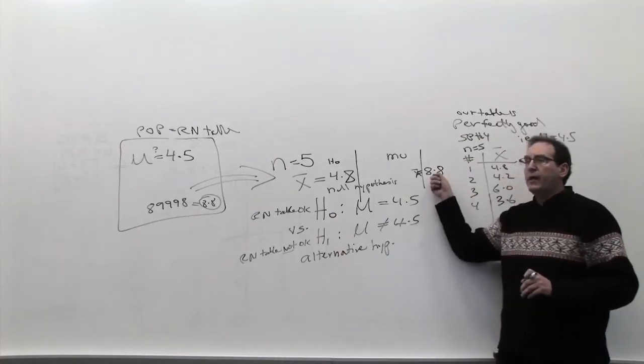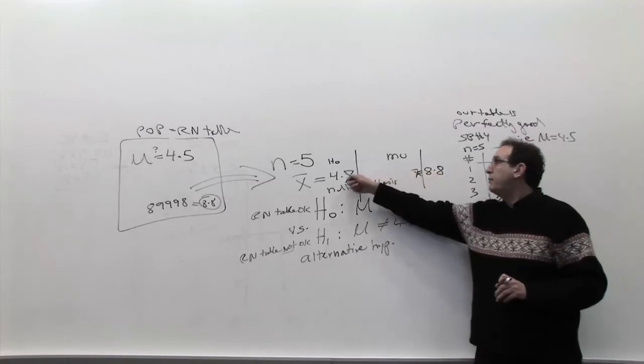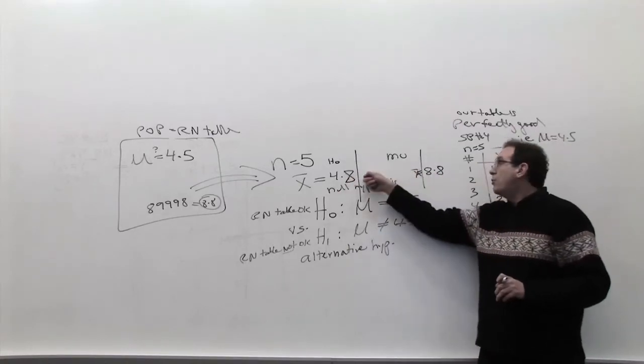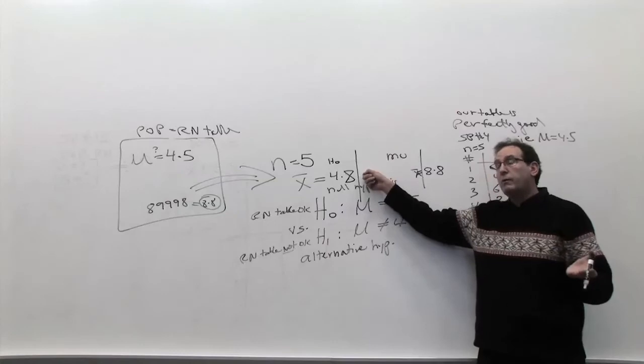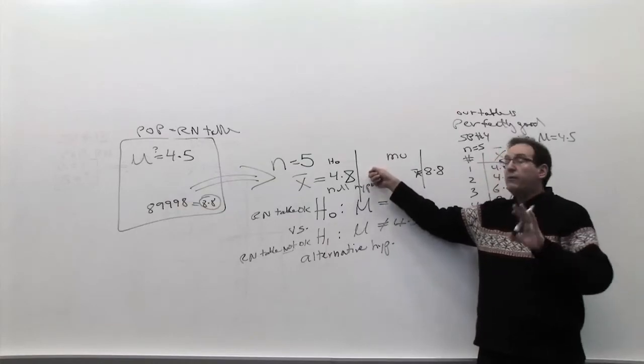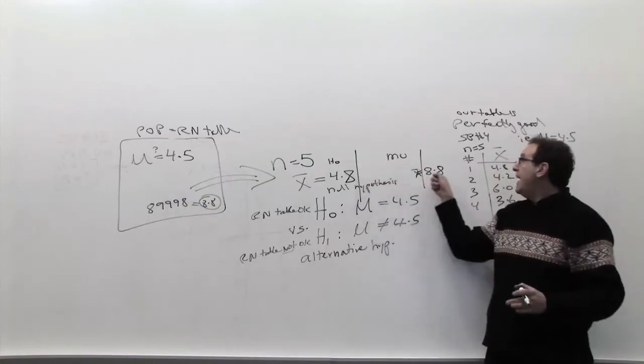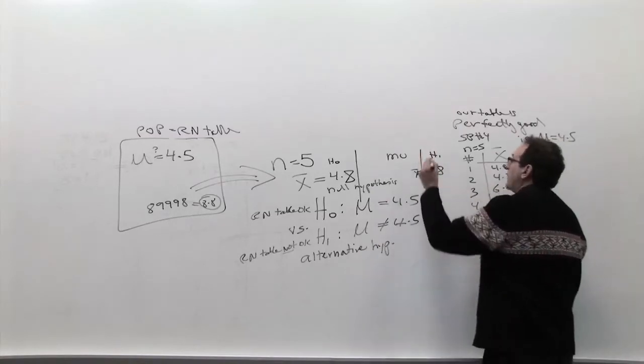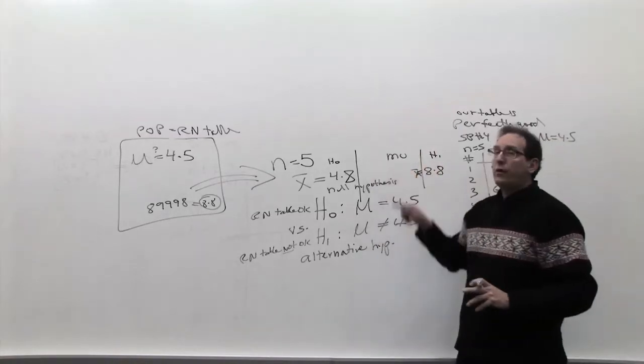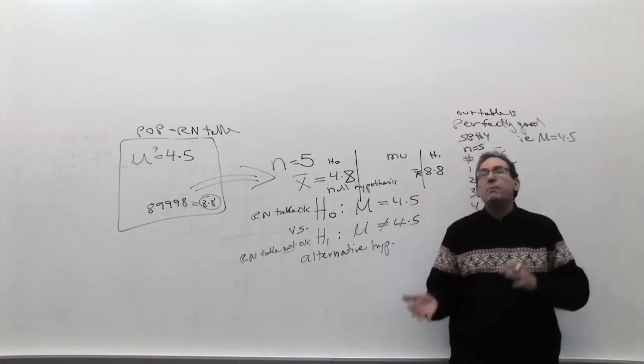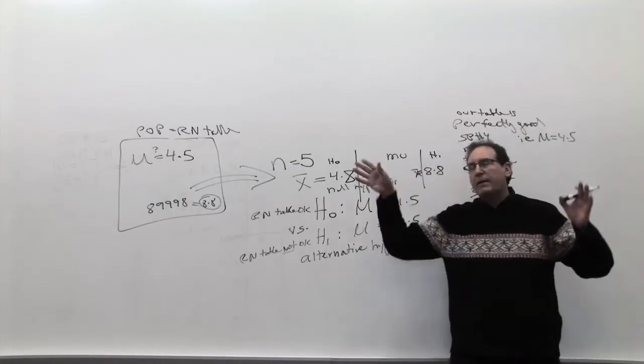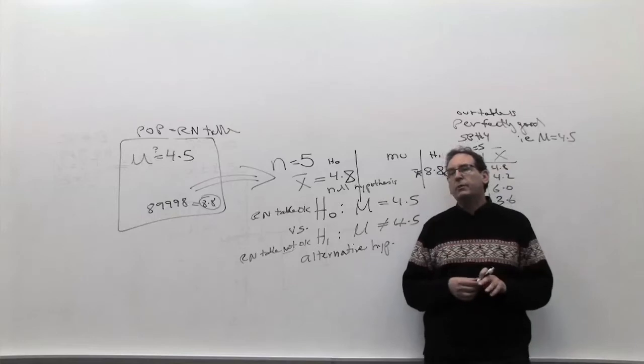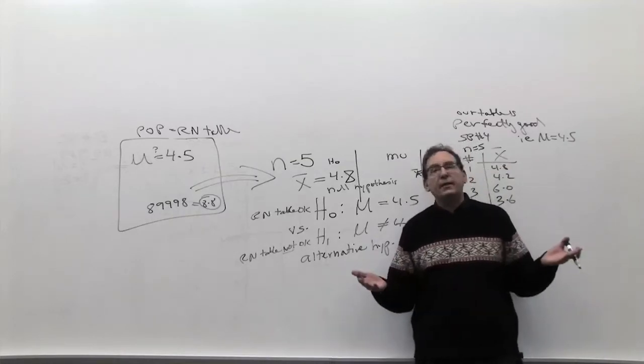4.8, everybody voted for H0. 5.0, a lot of you still probably vote for H0. 5.5, maybe get some people changing their vote. 8.8, everybody changes their votes. Everybody says this is H1. So at what point would you change your vote? Now some of you might remember this from last term, but try to wipe out the memory and start from scratch, because it's better to learn from scratch. At what point would you change your vote? Now how would you make that decision?